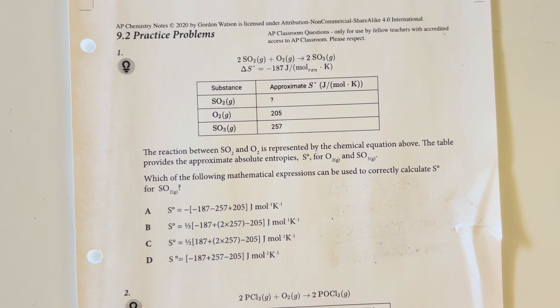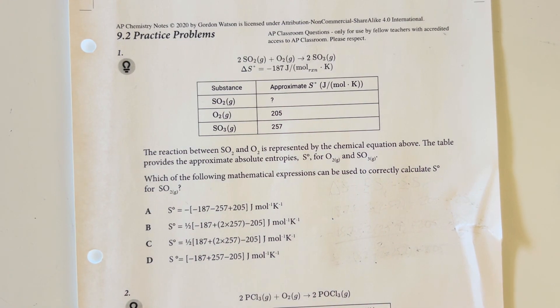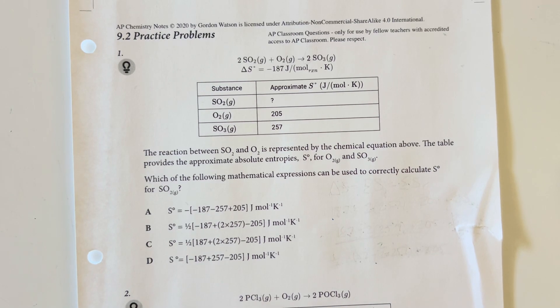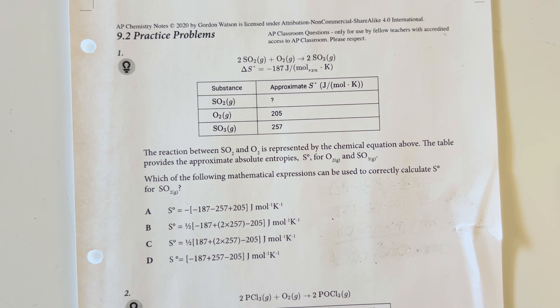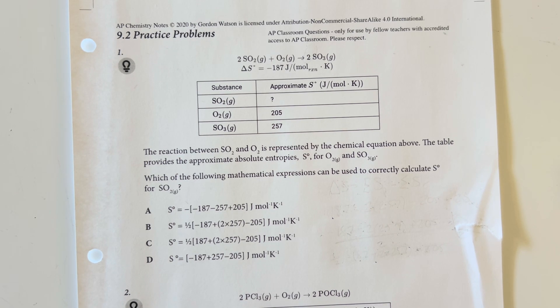9.2 practice problems. The reaction between sulfur dioxide and oxygen is represented in the chemical equation above. The table provides the approximate absolute entropies for oxygen and sulfur trioxide.